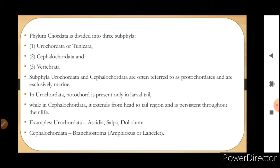In Urochordata, the notochord is present only in the larval tail and there is no notochord in the adult organism. In Cephalochordata, the notochord extends from head to tail region and is persistent throughout their life. Examples of Urochordata are Ascidia, Salpa, and Doliolum, and in Cephalochordata the example is Branchiostoma, that is Amphioxus or lancelet.